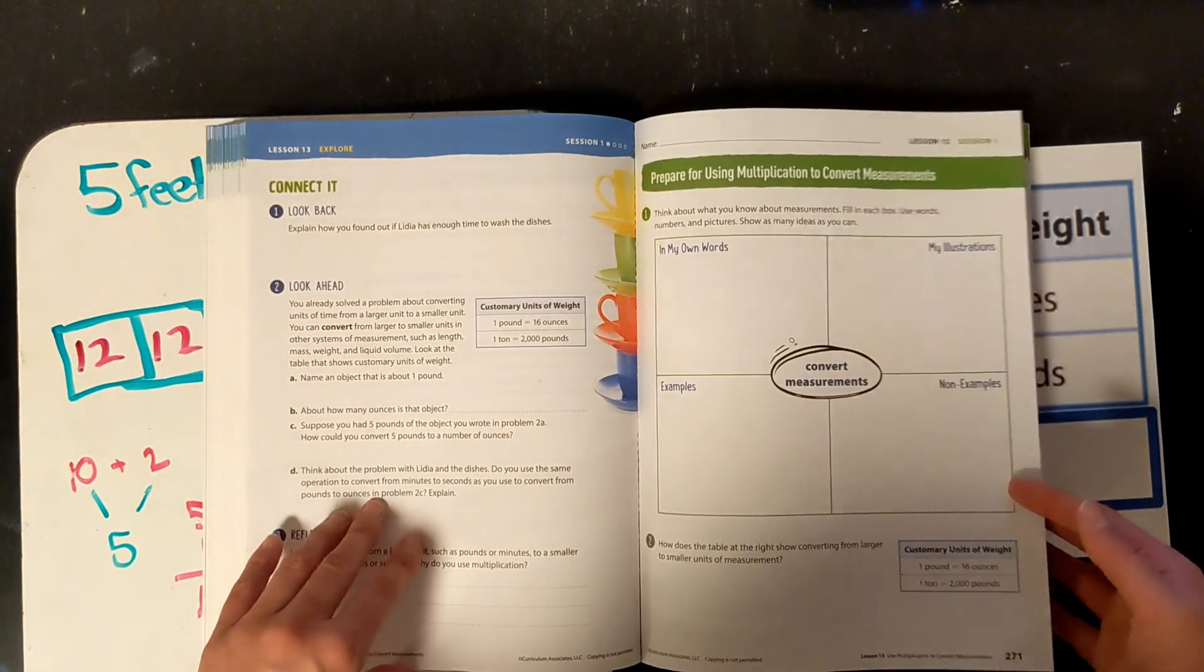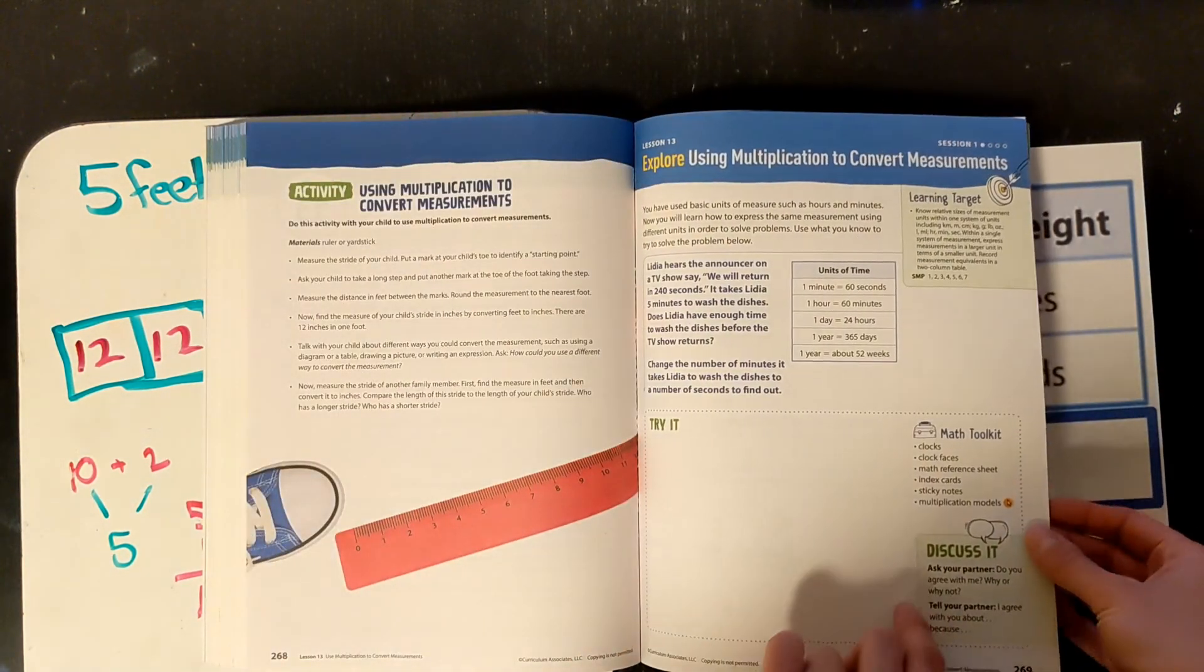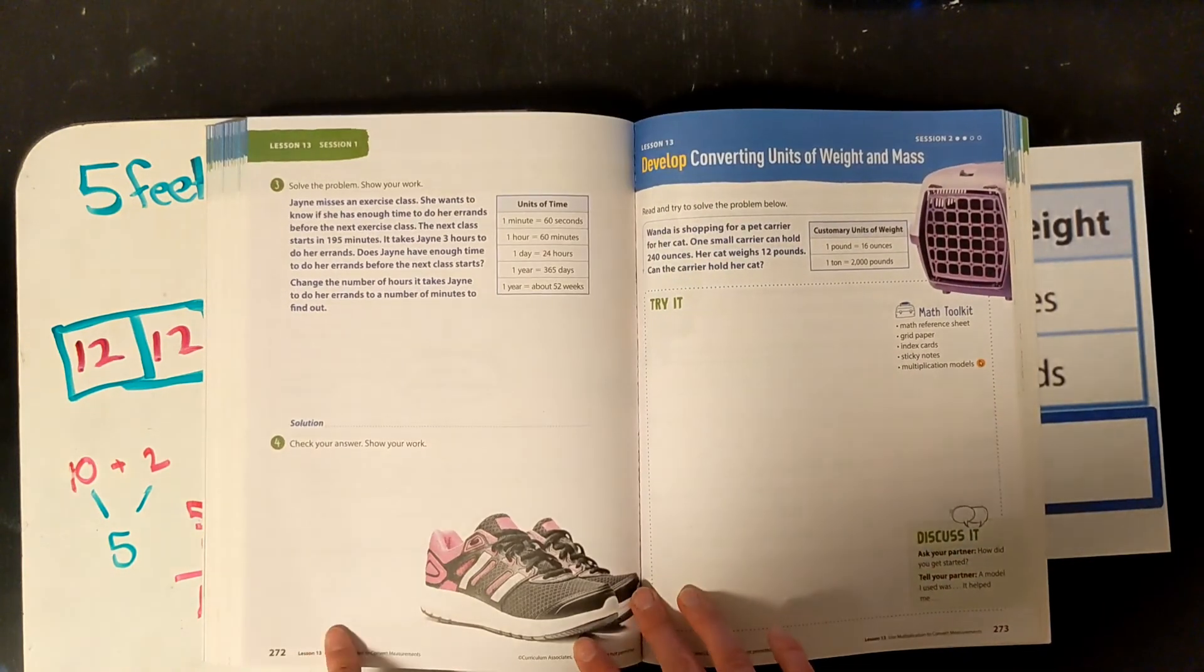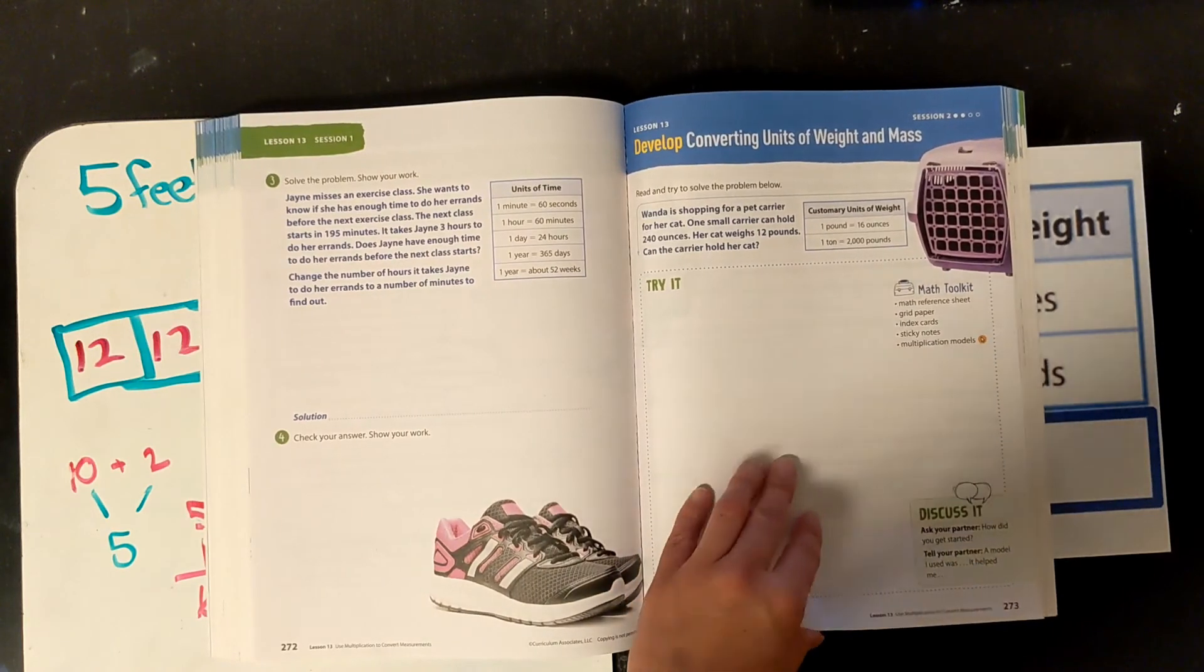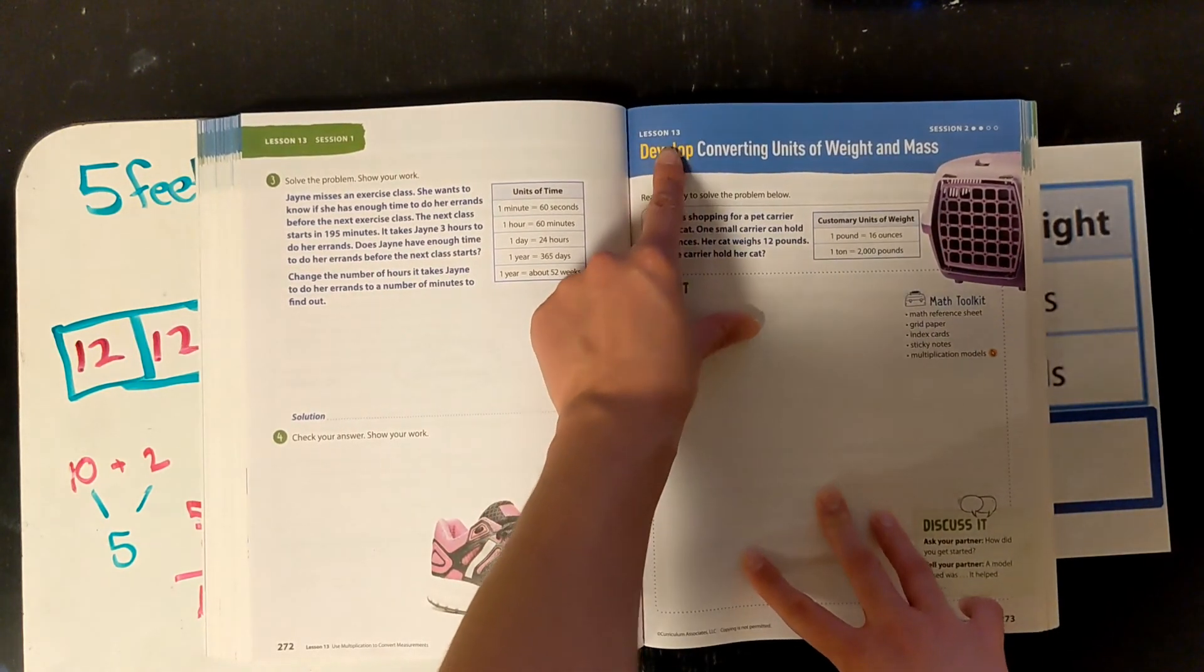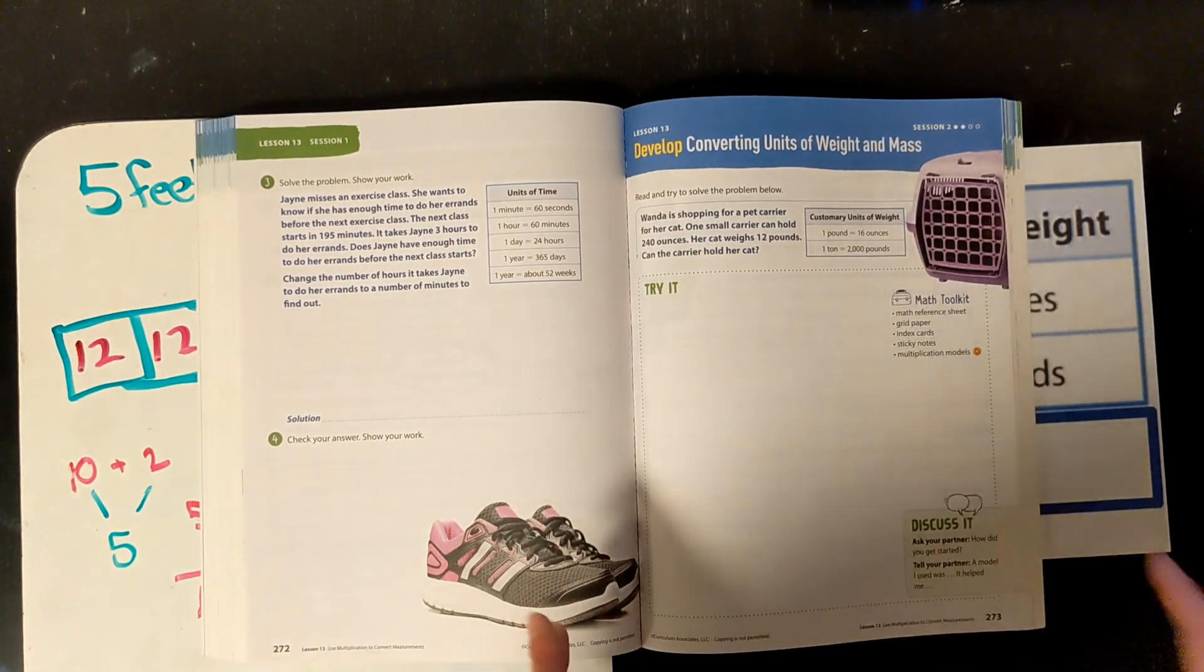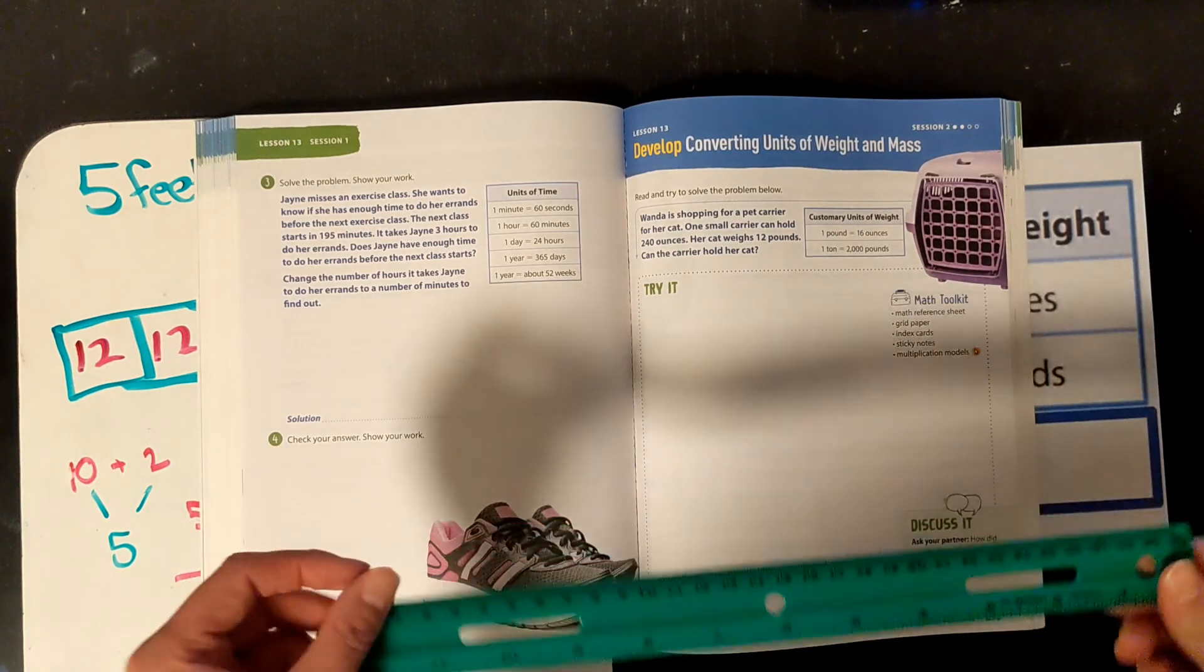But these are some really good practice questions. Okay. So, it is okay with me if you just do 269 and then you go to 272 and you try some more practice problems. Okay. If you finish that, you can keep going.